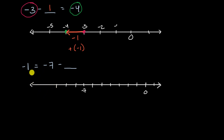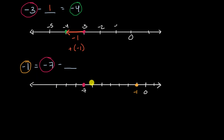We're saying negative one is equal to negative seven minus something. So essentially we're starting at negative seven, and we're subtracting something from that to end up over here at negative one. So let's think about what the arrow needs to do to get from negative seven to negative one. To do that, you're going to have to go six units to the right — one, two, three, four, five, six.